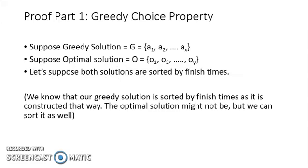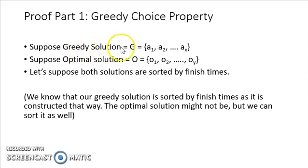Let's first verify the greedy choice property. We'll only check this property for the first greedy choice that we are making — we'll show that this first greedy choice is part of some optimal solution. Consider this: G is the greedy solution of our problem, representing the scheduling of activities. This greedy solution comes from the strategy discussed in the last lecture: scheduling activities based on earliest finish times. Let's suppose O is the actual optimal solution. As of yet, we don't know if our greedy solution is optimal or not — we are going to prove that it is.